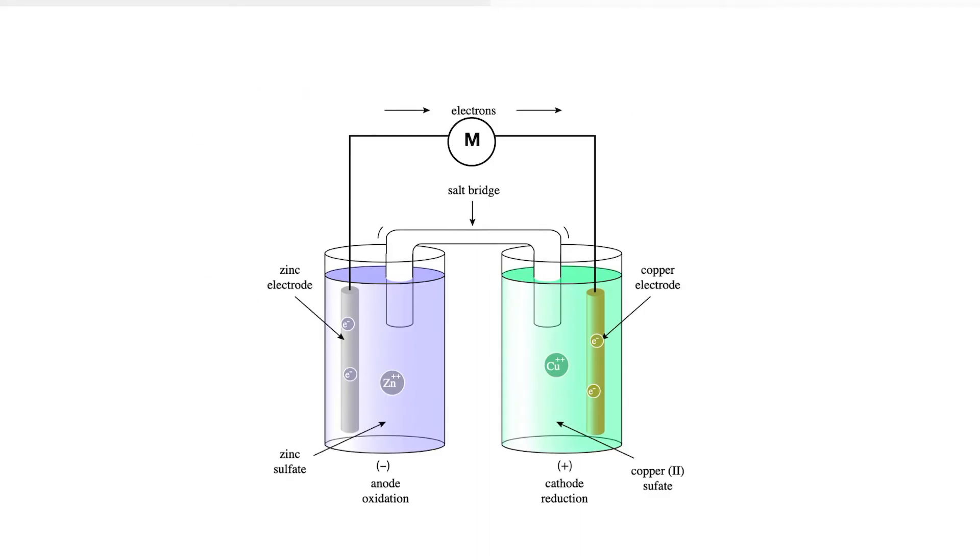So we can use delta G to determine the electrical work that could be obtained from a chemical reaction if it was arranged as a battery or a fuel cell in a way that allows us to use the energy usefully for doing work. Let's take our zinc half cell and our copper half cell and connect them together to make an electrochemical cell. My zinc half cell is going to be my oxidation or negative half cell because the standard electrode potential for zinc is less positive than that for copper.